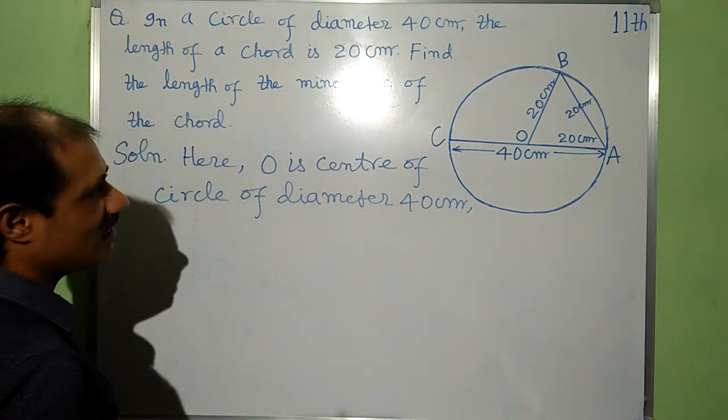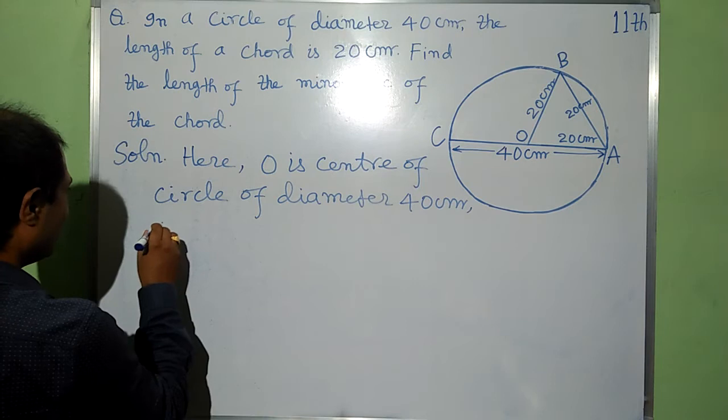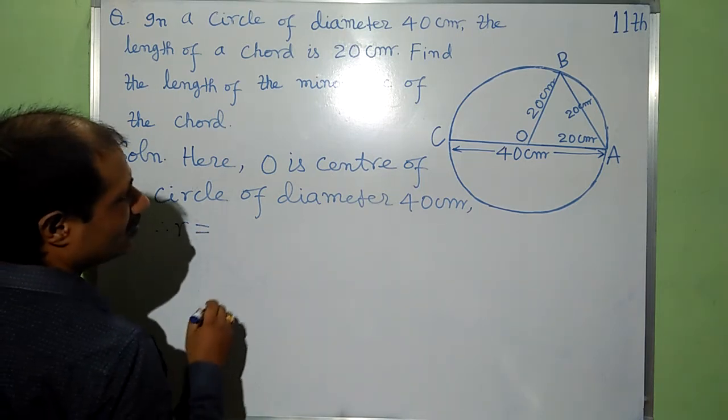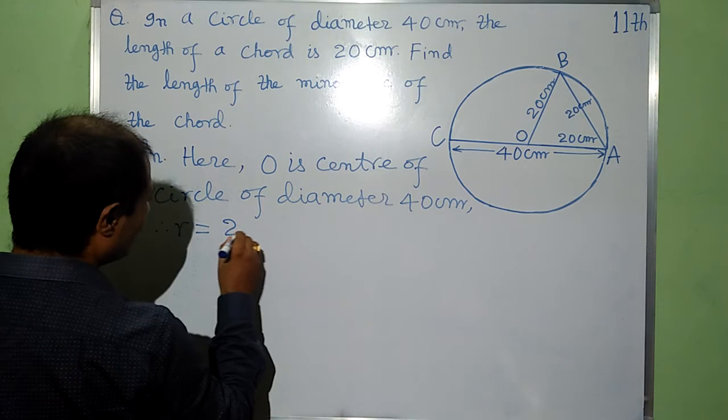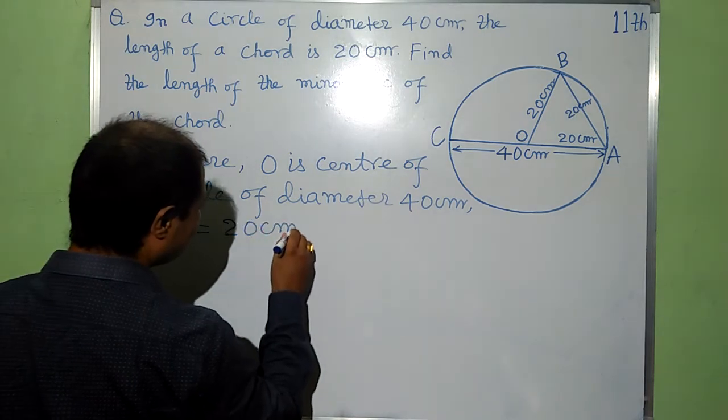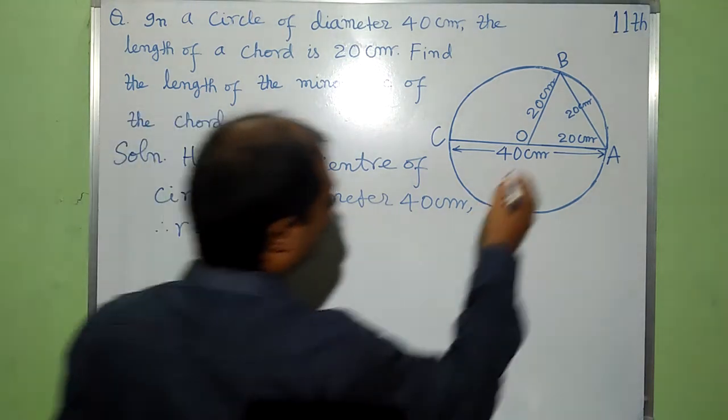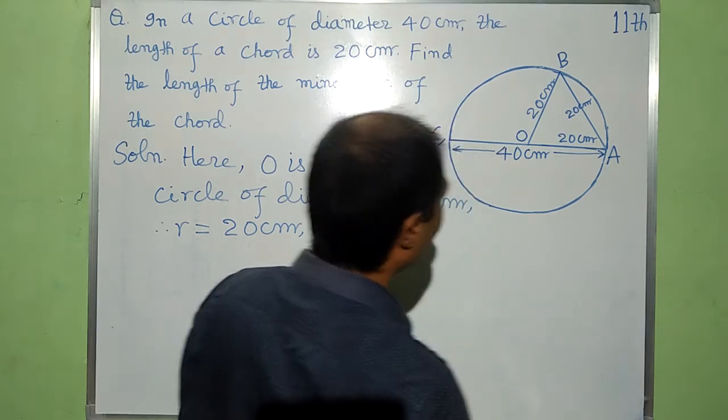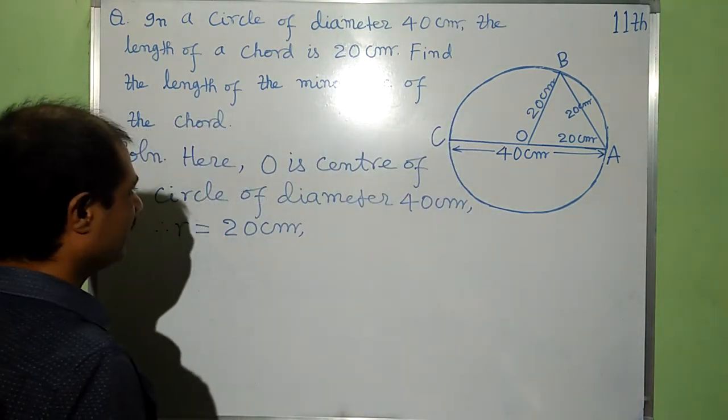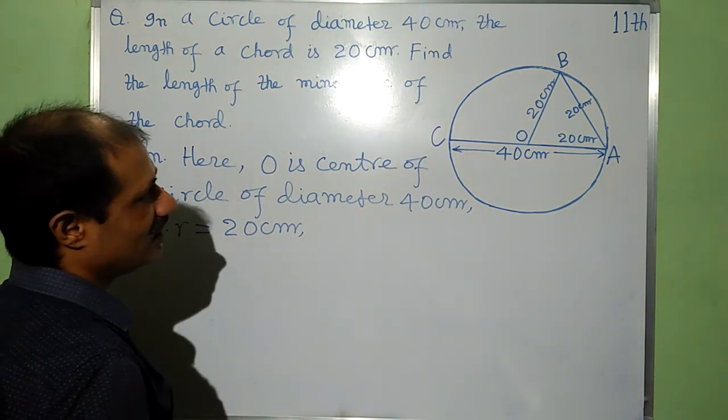Since diameter is 40 cm, hence R is equal to D by 2, that is 20 cm. OA, this is radius, that is R, it is 20 cm.